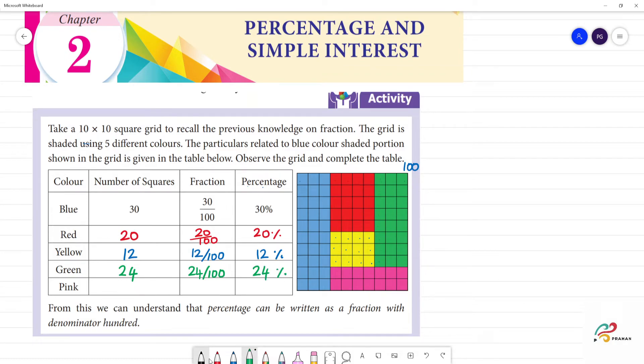Next pink. If you look at pink: 1, 2, 3, 4, 5, 6, 7. 7 into 2 is 14. Then we do 14 divided by 100 which is equal to 14 percentage.